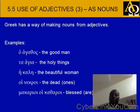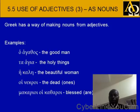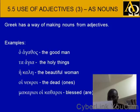Use of adjectives as nouns — this is the substantival use of adjectives. Greek has a way of making nouns from adjectives: ho agathos, the good man; ta hagia, the holy things; he kale, the beautiful woman; hoi nekroi, the dead ones. Makarioi hoi katharoi — blessed are the pure ones. Matthew 5:8.